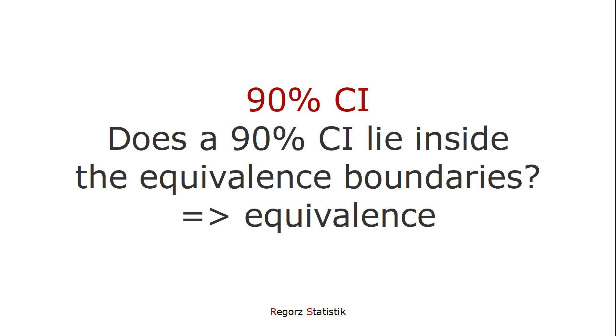The second approach is constructing a 90% confidence interval. And if this 90% confidence interval for our correlation lies inside the equivalence boundaries,